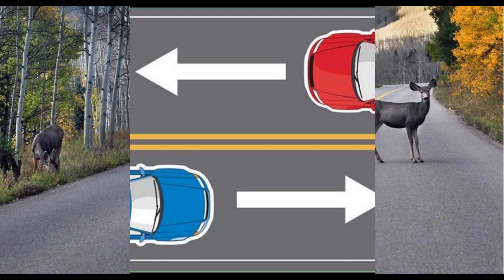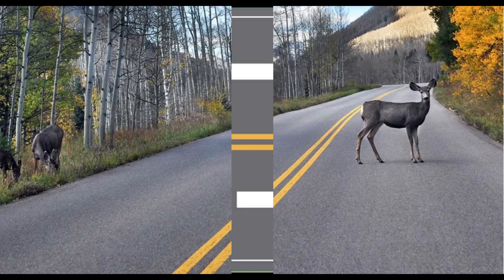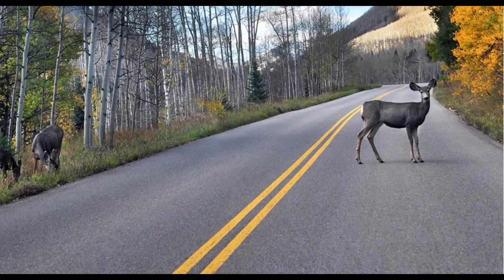The 1968 Vienna Convention on Road Traffic defines a road as the entire surface of any way or street open to public traffic. In urban areas, roads may diverge through a city or village and be named as streets, serving a dual function as urban space easement and route.